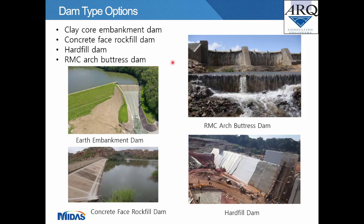Various dam type options were considered for the Oliphants Put dam site: a clay core embankment dam, a concrete face rock fill dam, a hard fill dam, or an RMC arch buttress dam. Four photographs on the slide show typical configurations of each dam type.